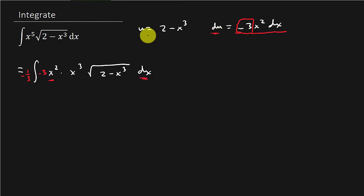all of that can be replaced with du. And then the u I'm going to put in the place of 2 minus x cubed. But what about this x cubed? What am I going to replace that with? Because I need to get everything in terms of u. Well, if you look at this, I've got x cubed is equal to 2 minus u if I solve this thing for x cubed.